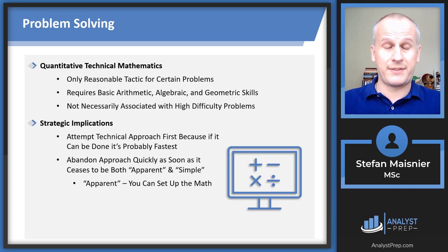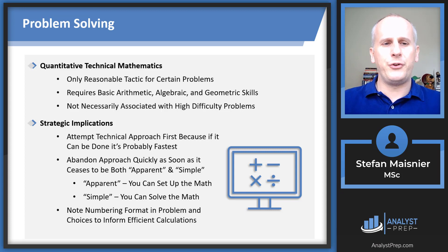Apparent means you can set up the math, so you know how to create the algebra, you know how to set up the geometry. But apparent means you can set up the math, and sometimes it immediately is apparent because they don't hide the math from you. Simple means that you personally can solve the math. Also note the numbering format in your problem and in the choices to inform efficient calculations. Make sure that you stay in fractions if your answer choices are in fractions, if you are in decimals or percents, the same thing. Make sure that you are math ambidextrous.